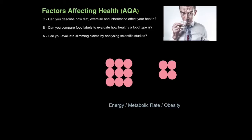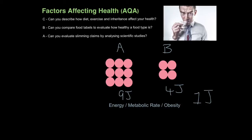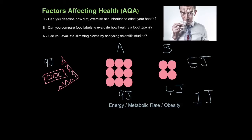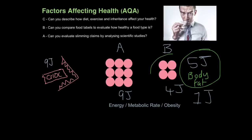For those still confused with the relationship between energy intake, metabolic rate, and obesity, consider this analogy. Imagine organism A made of nine cells and organism B made of four cells, where every cell has an energy demand of one joule. Organism A has an energy demand of nine joules and organism B has four joules. If both consume a chocolate bar containing nine joules, organism A utilizes all nine joules, whereas organism B has five joules left over, which gets converted to body fat. You can see how prolonged consumption would result in organism B getting larger and larger.